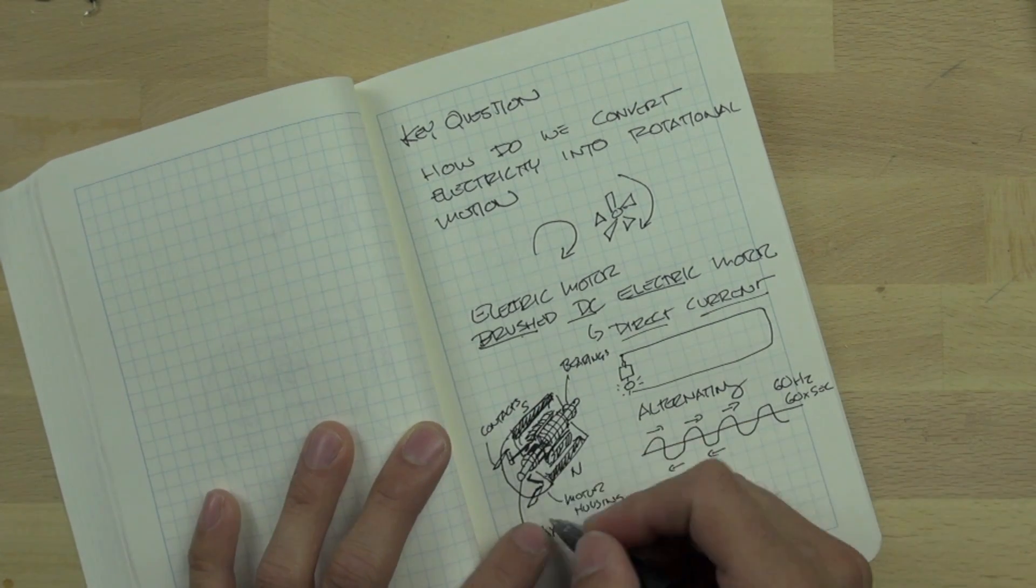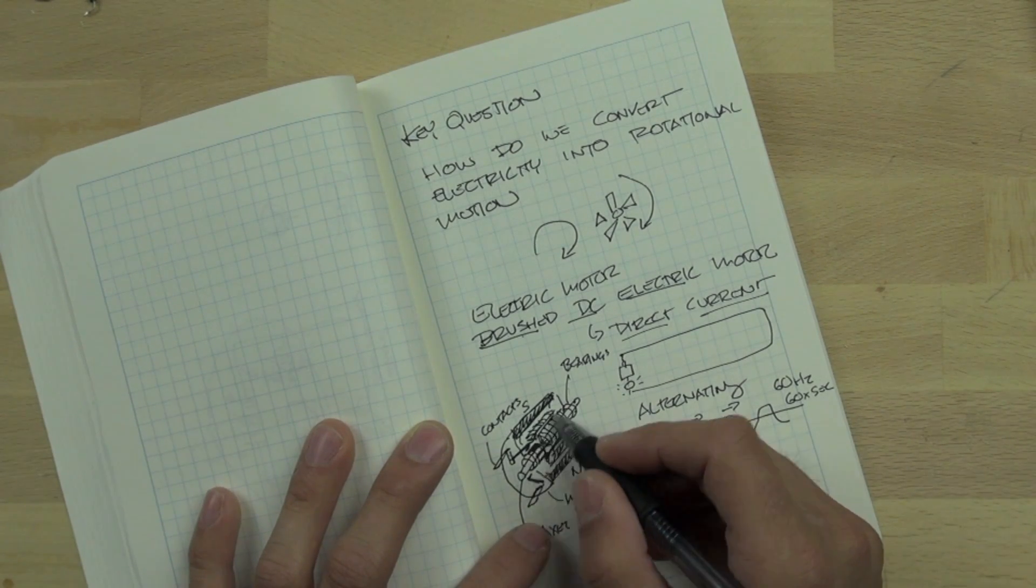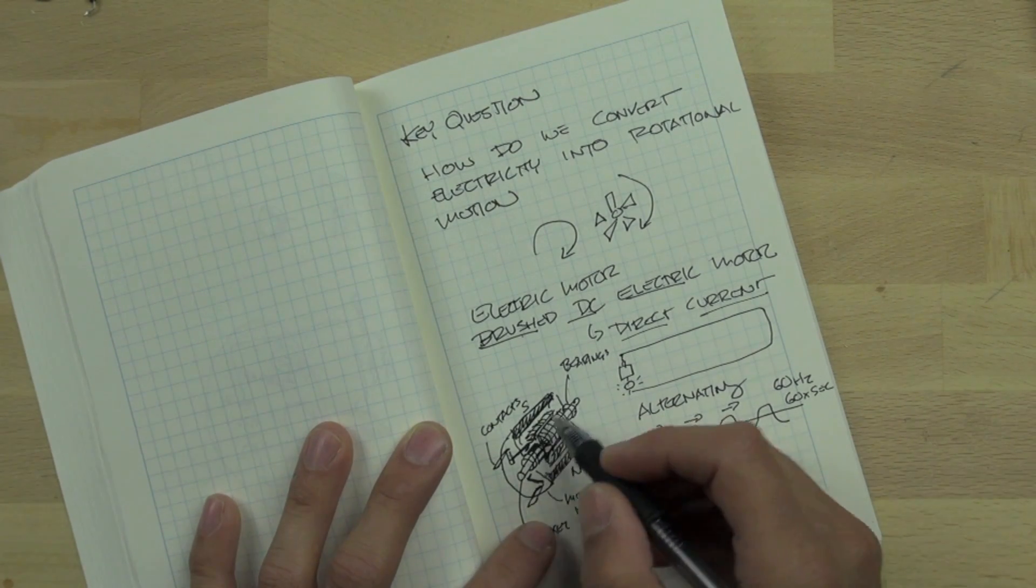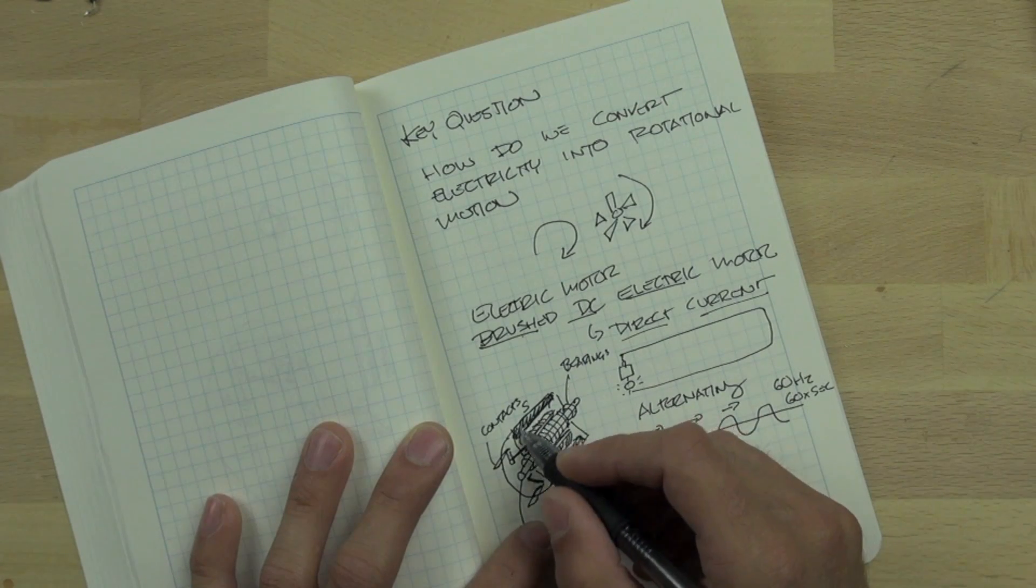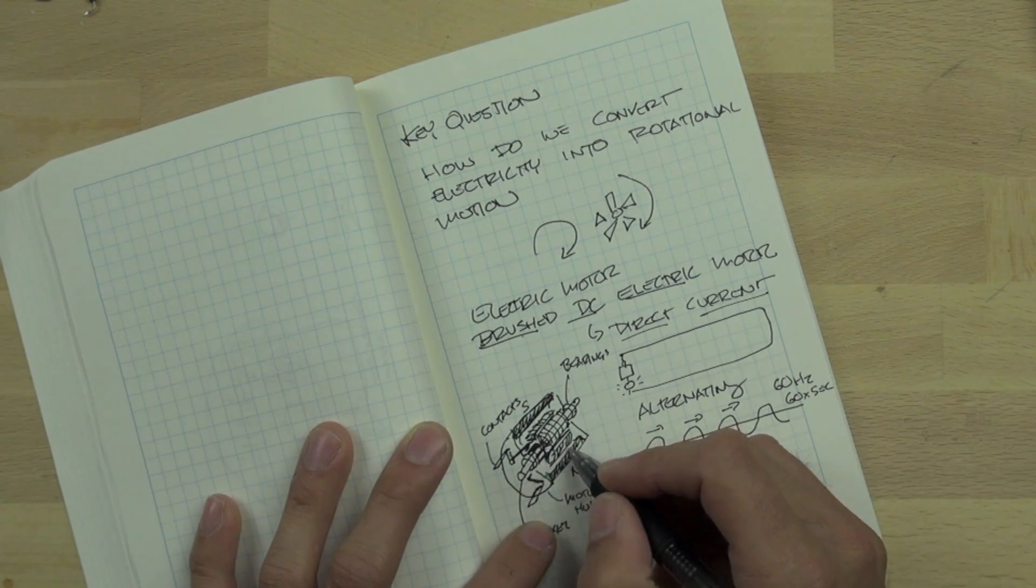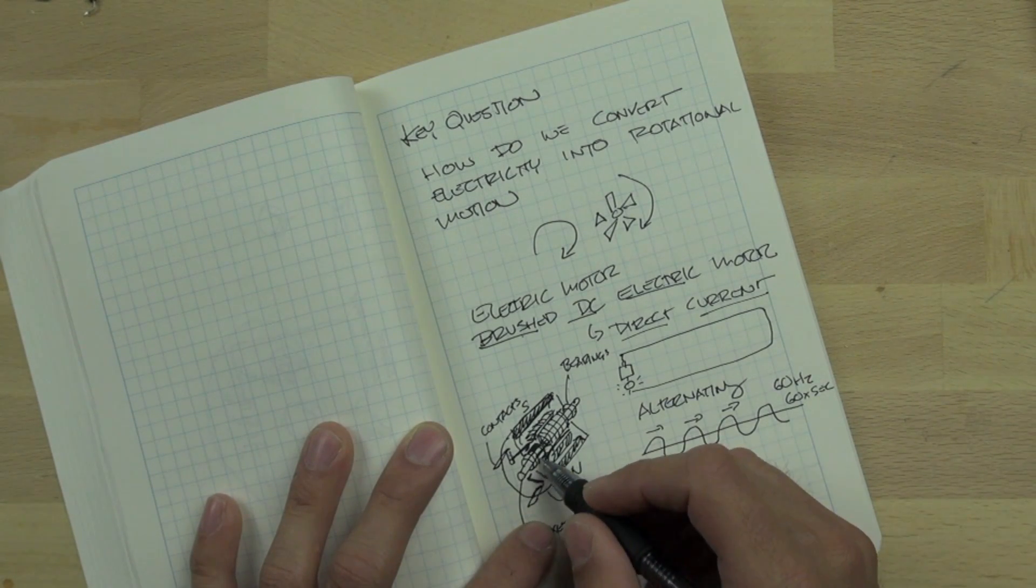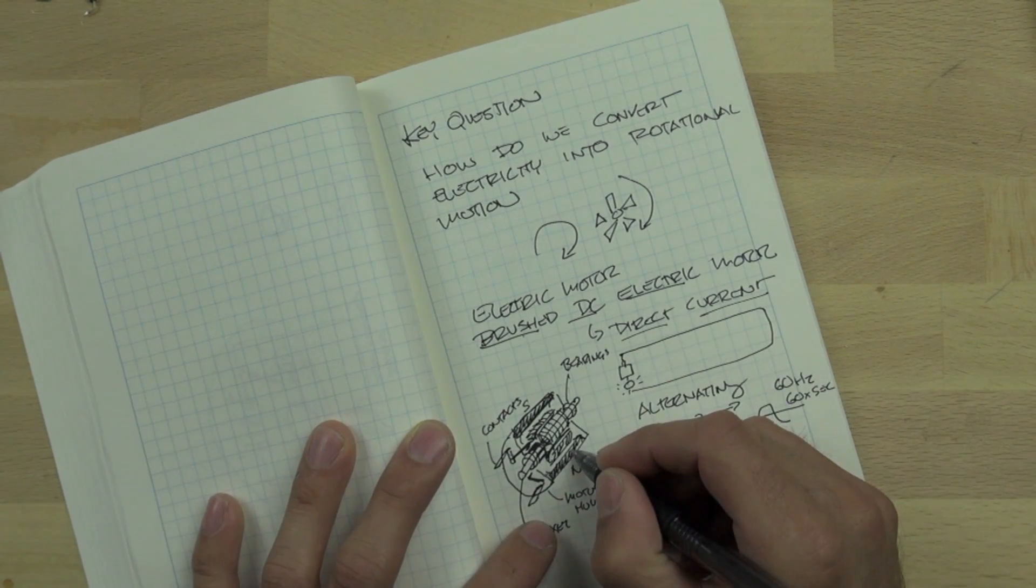Those two permanent magnets resist the armature as it becomes electromagnetized and causes it to repel the magnet and spin around. And the commutator allows the power to come in from one side and create a magnetic field that resists the south side. And then as the power is leaving on the north side, it resists.